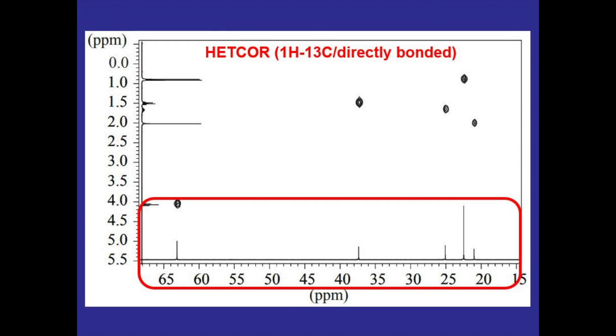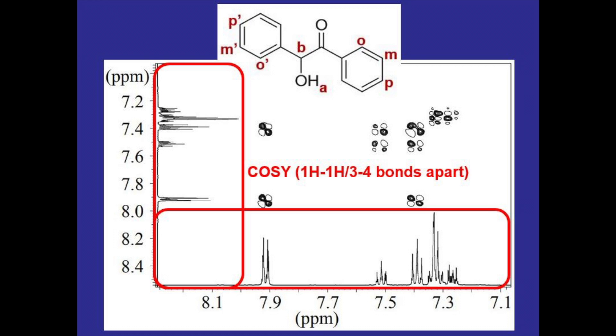This 2D NMR though is called a COSY and it shows coupling between hydrogens to other hydrogens that are three to four bonds apart. So on each of the axes we have identical HNMRs and these spots show coupling between those hydrogens.